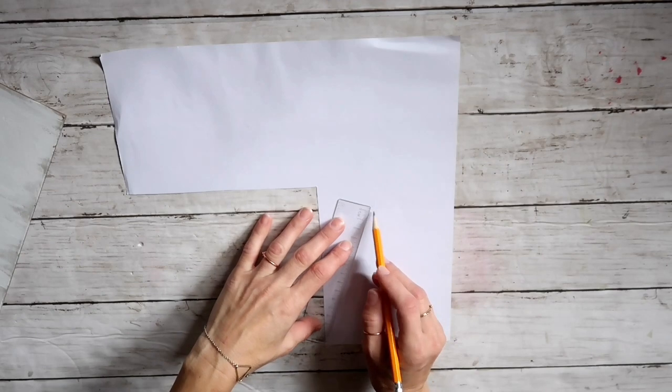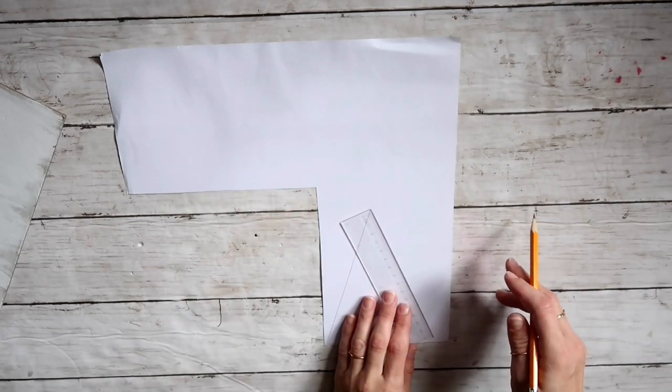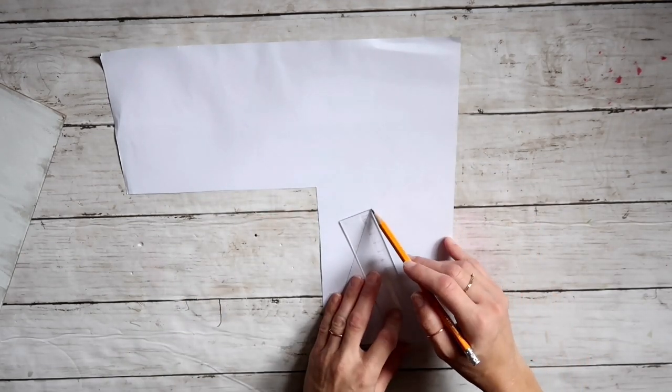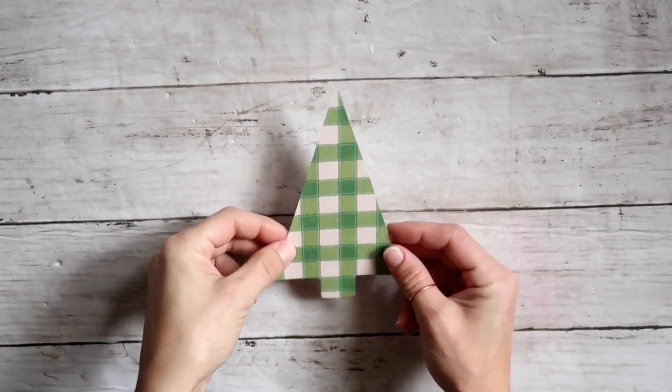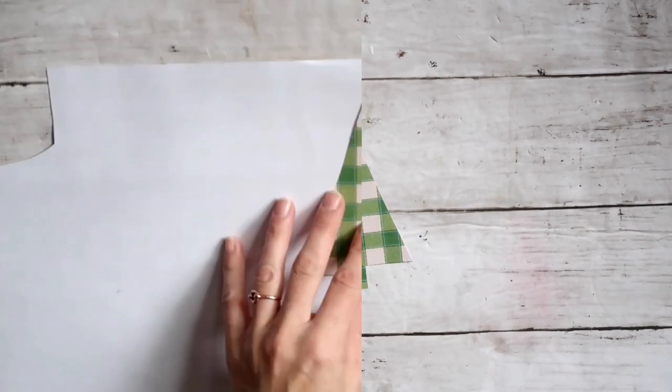I'm going to be using craft papers - the three on the right side came from Hobby Lobby and the polka dot one came from Joann's. First I'm going to take a ruler and create a very simple triangle shaped Christmas tree. I'm going to cut it out and this is how it looks like.